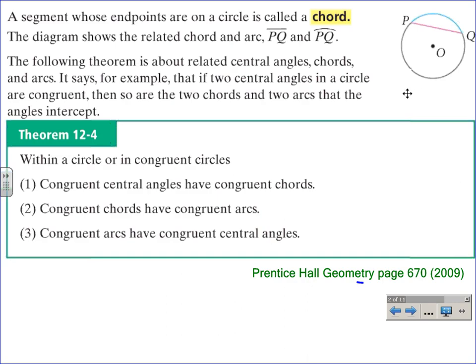A segment whose endpoints are on a circle is called a chord. In the diagram, the related chord and arc are segment PQ and arc PQ. You can see in the circle here we have chord PQ and the related arc PQ. It would be good to note at this time that we also have a central angle. We could name that angle POQ or just angle O. Central angle POQ is related to chord PQ and arc PQ.